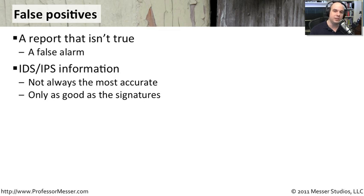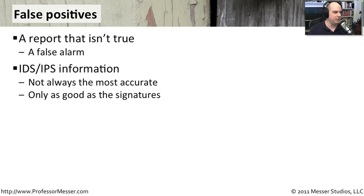You see this a lot with intrusion prevention systems or intrusion detection systems, because those are signature-based systems. Occasionally, they can see something go through that matches a signature that actually is not related to an attack. Your IPSs and IDSs are really only as good as those signatures you have on them. So make sure you're doing sanity checks and double-checking what's going through, to confirm you can link it back to an actual threat.